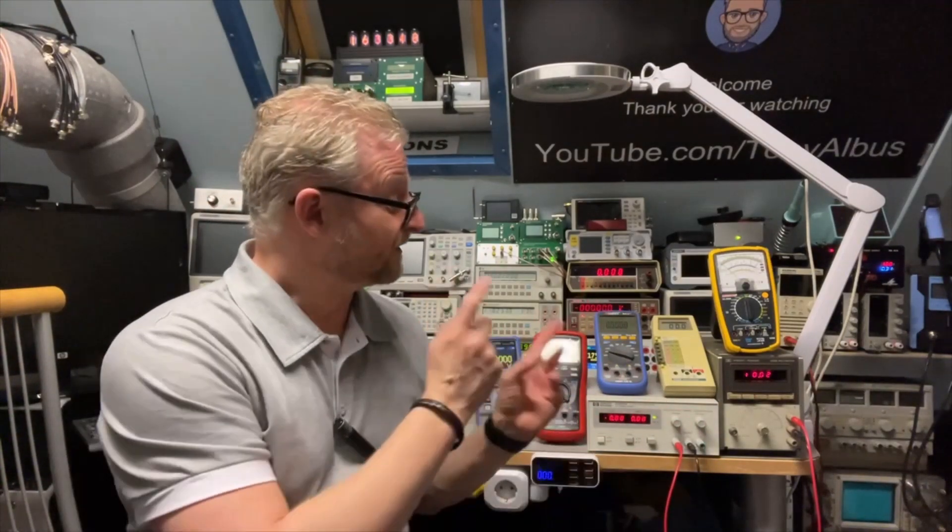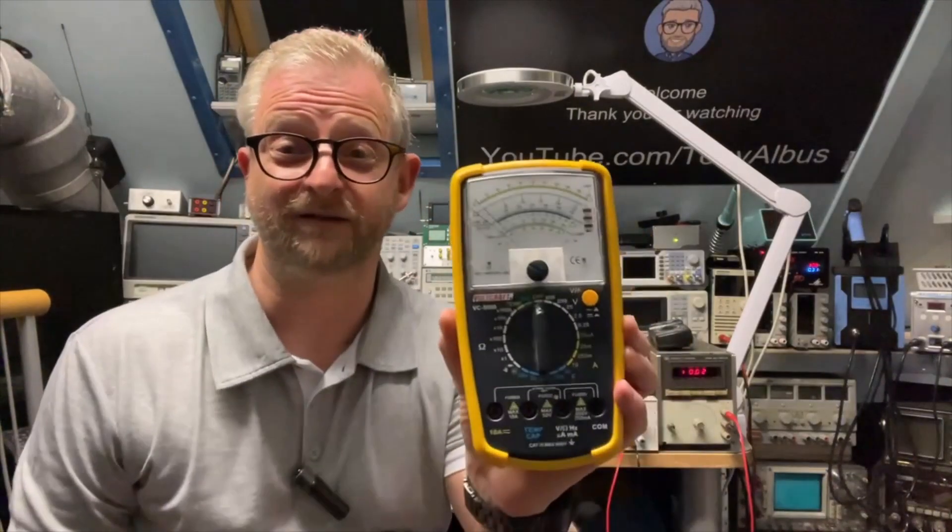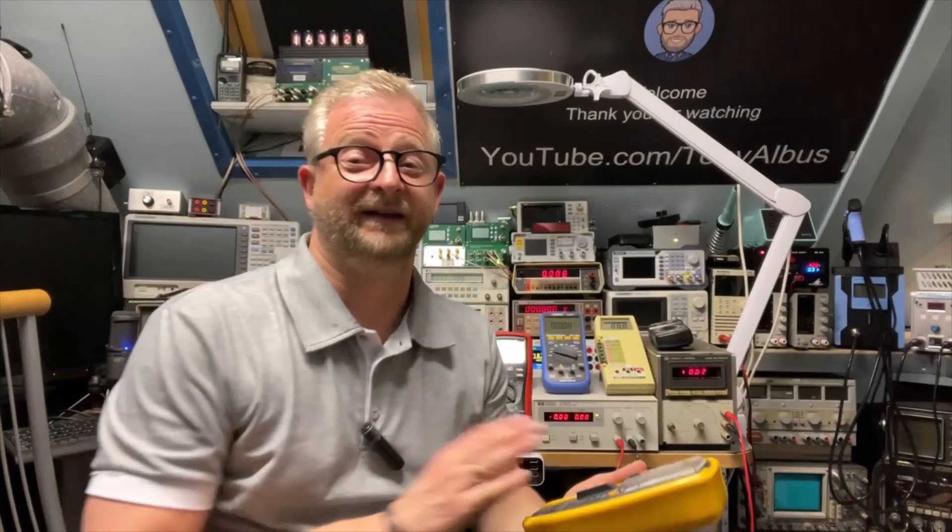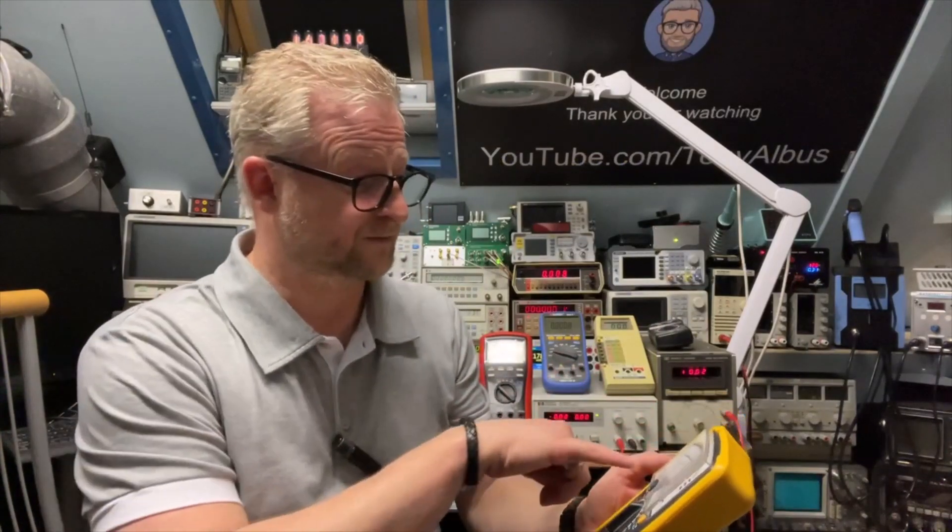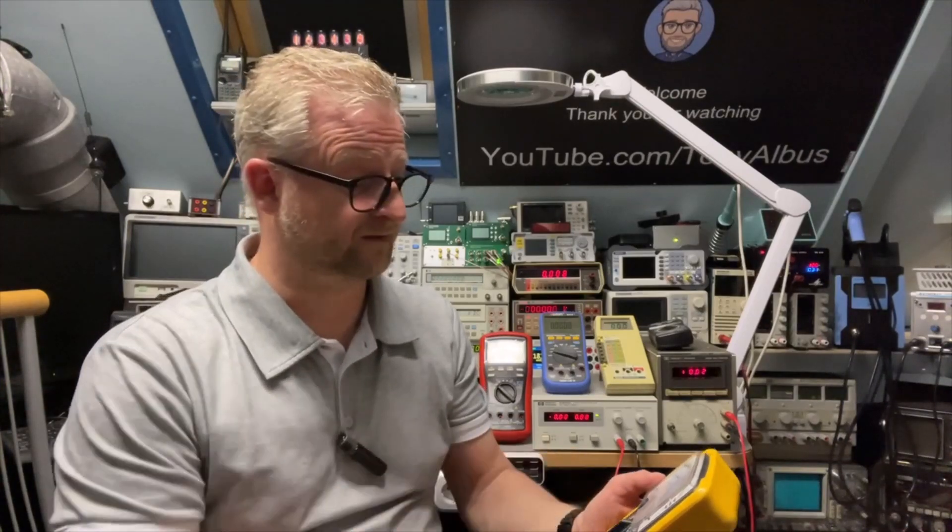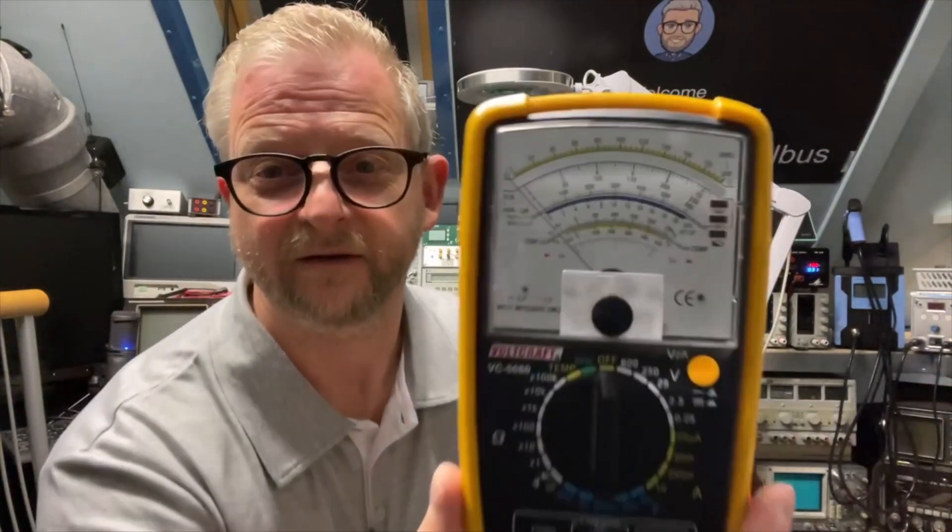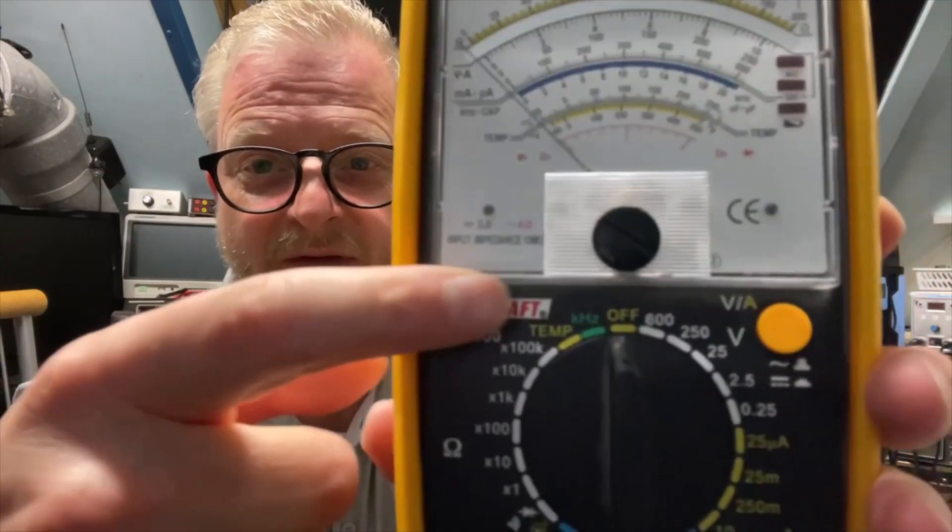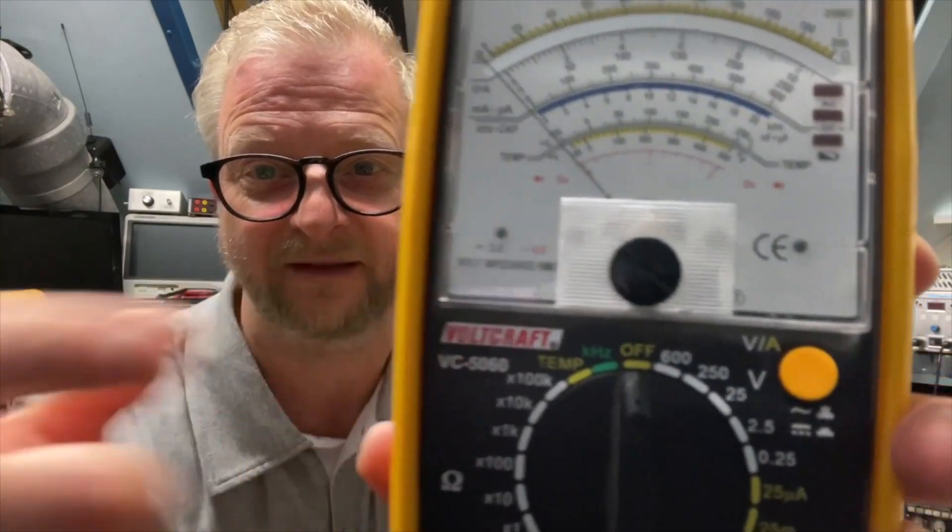And I tried to show on the displays. So first, of course, we had the analog meters, and then it also had an accuracy. Now this one here is 3% on DC and 4% on AC. On AC, it's very small, but here it is.